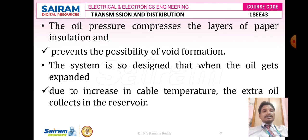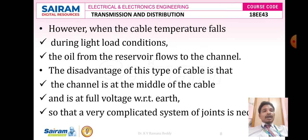The system is designed so that when the oil expands due to increase in cable temperature, the extra oil collects in the reservoir. However, when the cable temperature drops during light load conditions, the oil from the reservoir flows back to the channel. The disadvantage of this type of cable is that the channel is at the middle of the cable and is at full voltage with respect to earth, so that very complicated systems for joints are required. Wherever we have to increase the length of the transmission line, it is somewhat difficult to overcome the leakage of oil especially at the center of the core, which consists of an oil channel or oil ducts.